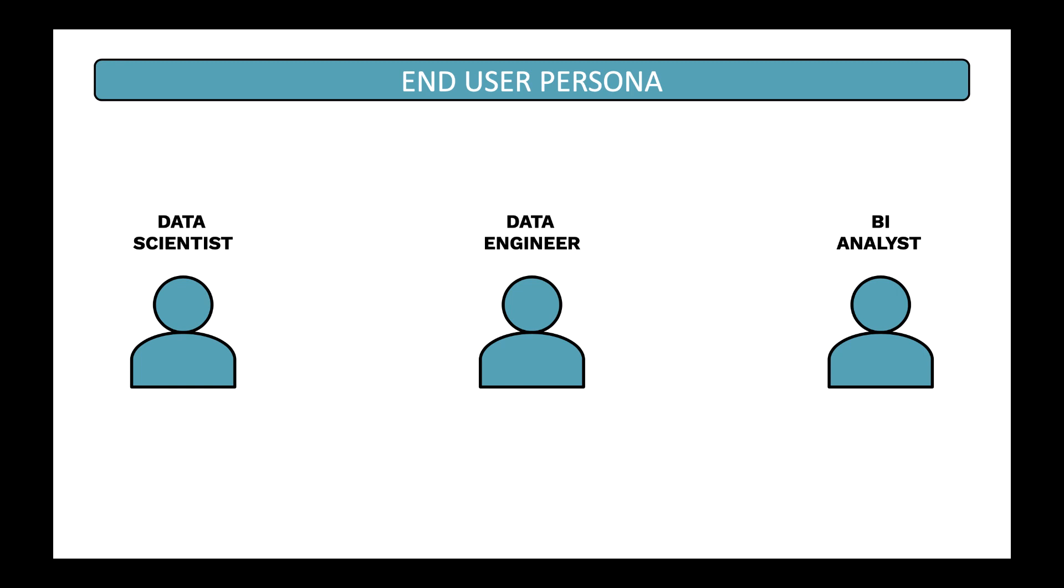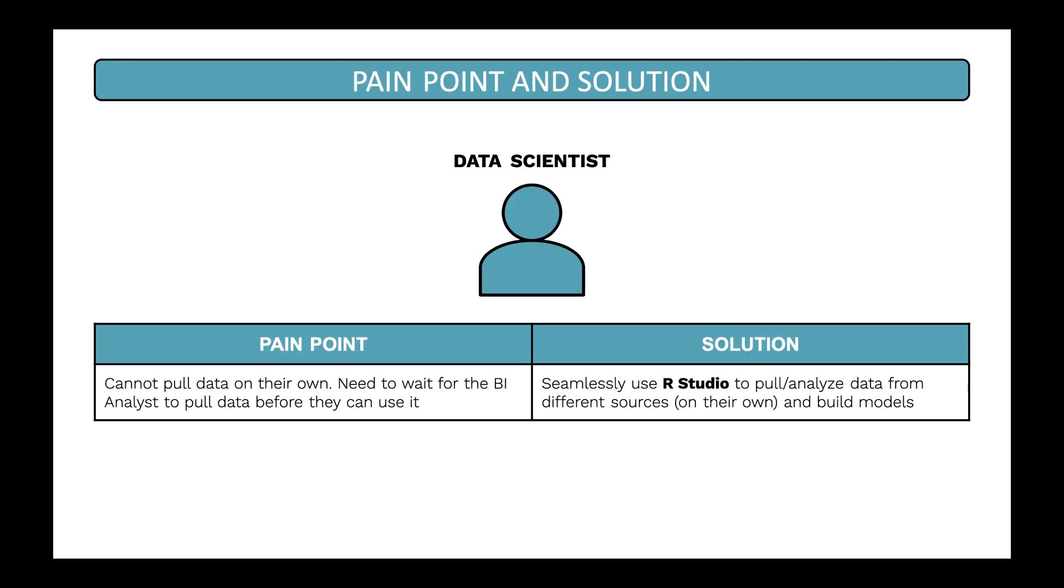The first is a data scientist, the second is a data engineer, and the third is a BI analyst. Let's go through the pain points for each of these different end users. Today, the data scientist essentially gets his training data by talking to the business analyst to pull down data and send it to him. Instead, the data scientist wants a situation where this is seamless, where they can easily go to some system, pull the data down, and analyze it.